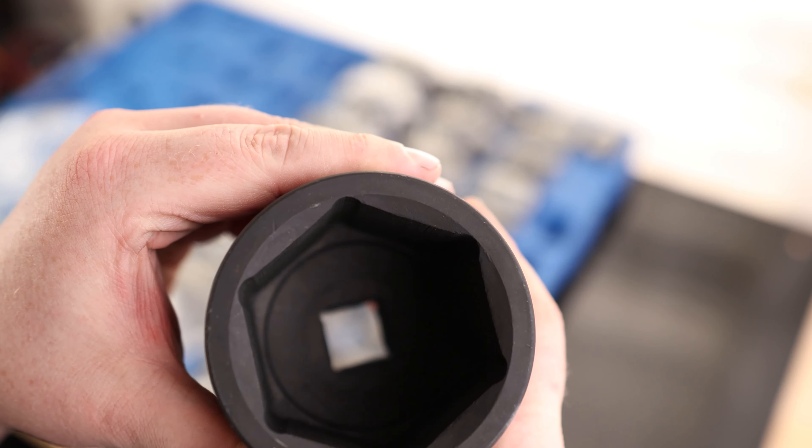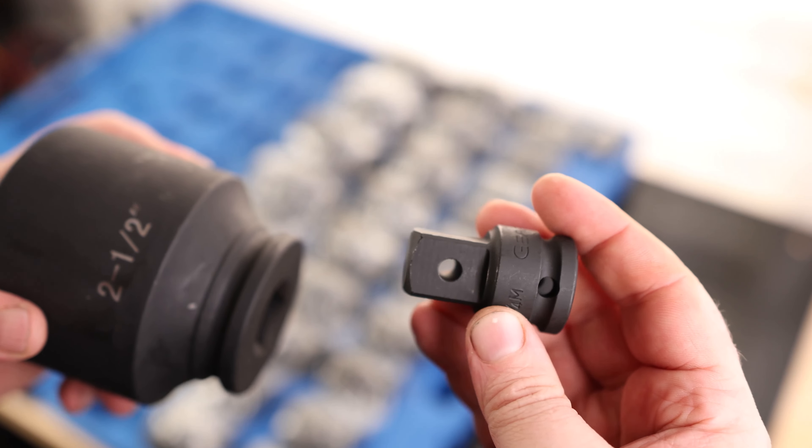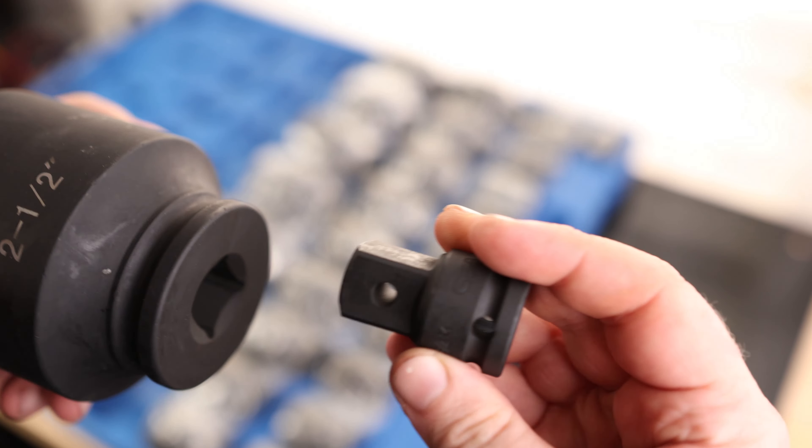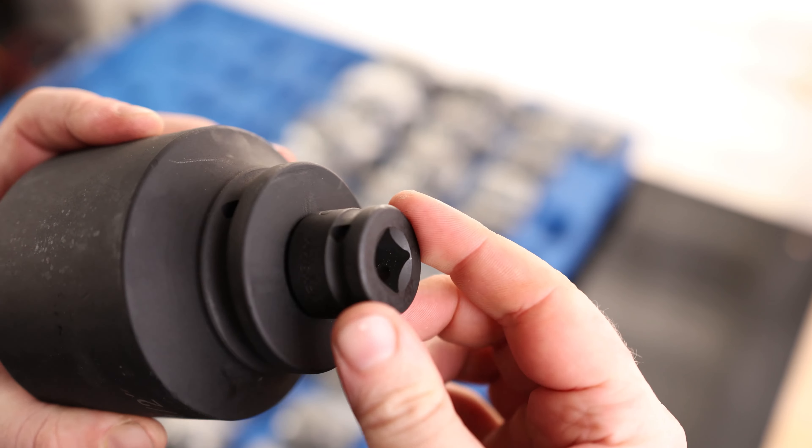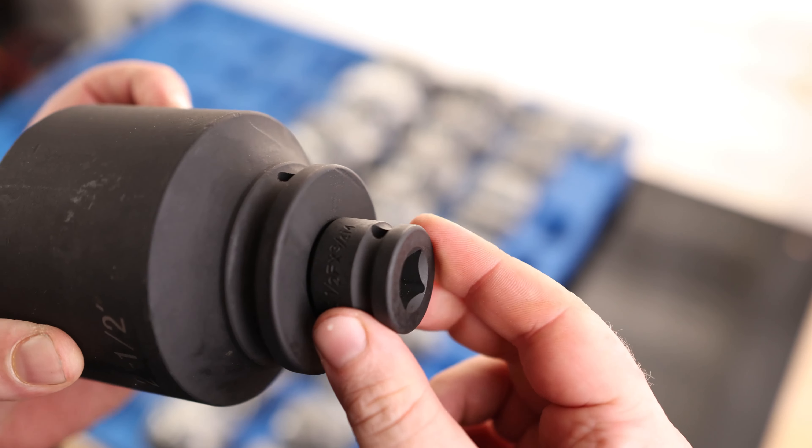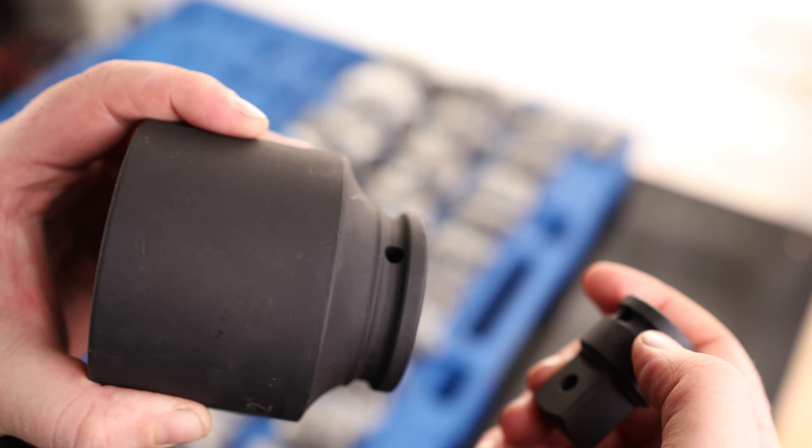So this is an incredibly heavy duty socket. It doesn't come with this, but I've got this just so you can see what I'm talking about. This is a three quarter inch to half inch adapter and it's got that hole going through it. So you can drop that in there like that, drive in our pin and then attach our extension or even just use it exactly like this. So that is an option if you don't have a three quarter inch impact wrench or anything like that.